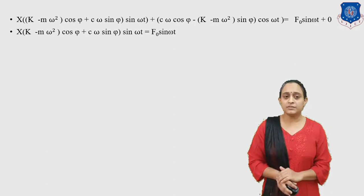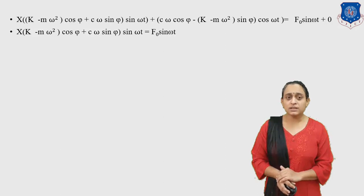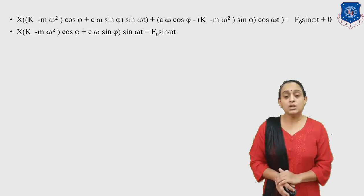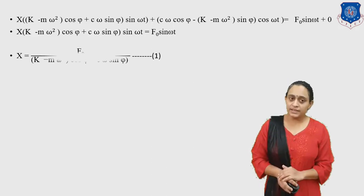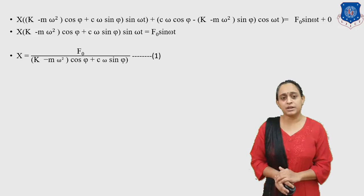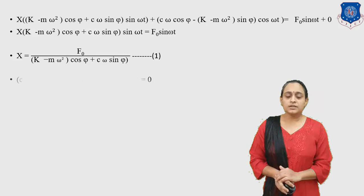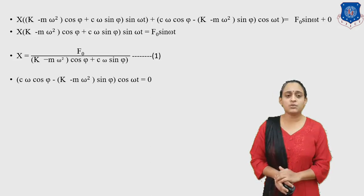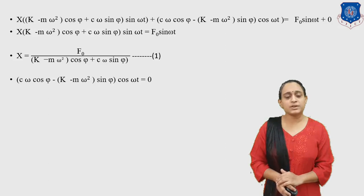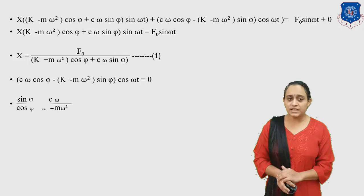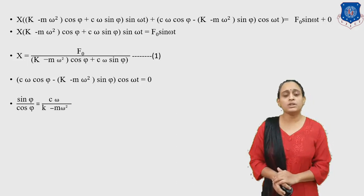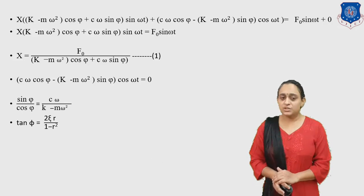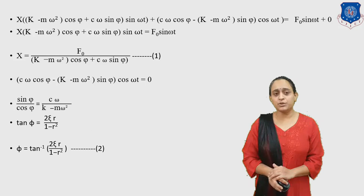Comparing the sin(ωt) terms on both sides: X·[(K − Mω²)cos(φ) + Cω·sin(φ)] = F0, giving X = F0 / [(K − Mω²)cos(φ) + Cω·sin(φ)]. Comparing the cos(ωt) terms with zero: Cω·cos(φ) − (K − Mω²)sin(φ) = 0, so tan(φ) = sin(φ)/cos(φ) = Cω/(K − Mω²) = 2ζR/(1 − R²), confirming φ = tan⁻¹[2ζR/(1 − R²)].